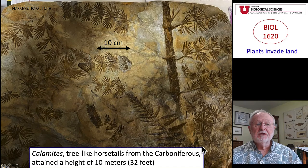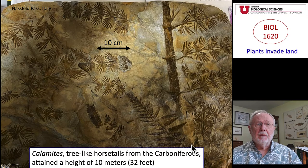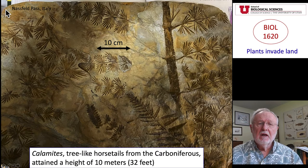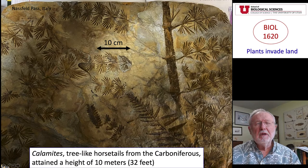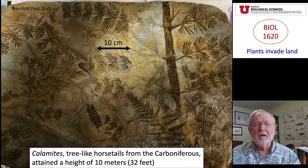Welcome back to Biology 1620. Today we're going to talk about plants invading land. Here's a fossil from my collection that was collected on the Austrian-Italian border at Nauders Pass. It shows Calamites, which was a tree-like horsetail from the Carboniferous period — the time when most of the carbon on this planet was laid down.